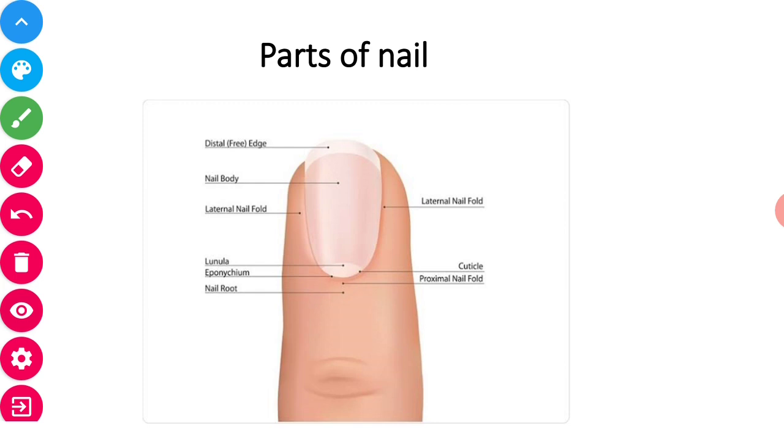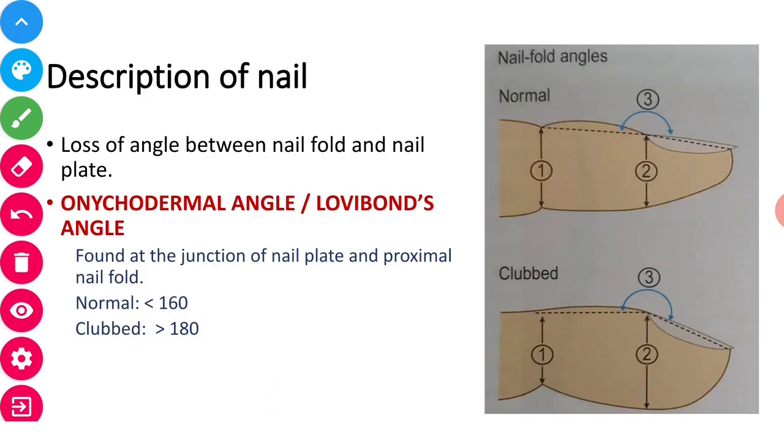Now let's come to the onychodermal angle and Lovibond's angle. This angle is very important. This angle is basically between the nail plate and the proximal nail fold. This angle is found at the junction of these two. Normally in this picture as you can see this angle is less than 160 degrees.